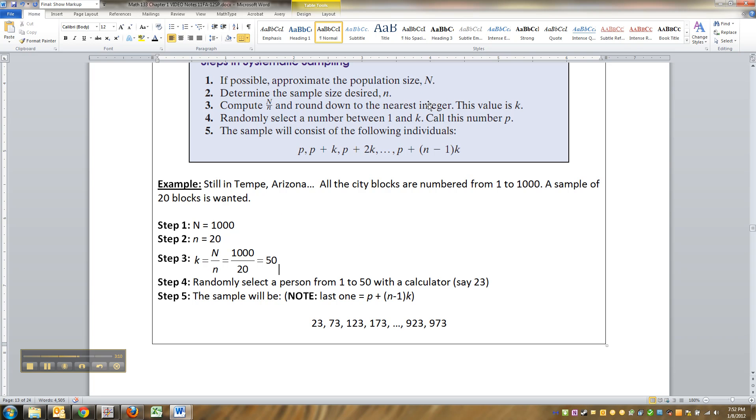So, you round down to the nearest integer. If that had been like fifty point three, you would have rounded down to fifty. Fifty point six, you round down to fifty. That value is called K.